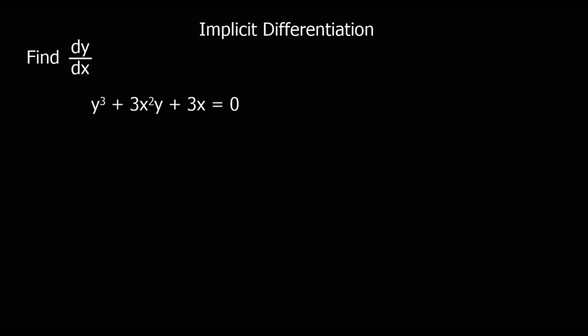Here's another question — you can pause the video, give this one a go, and then I'll go through the answer. So we differentiate y normally and then put dy/dx after it, giving 3y squared dy/dx.